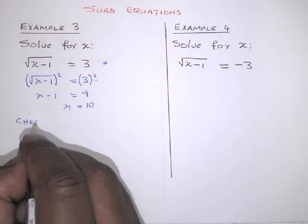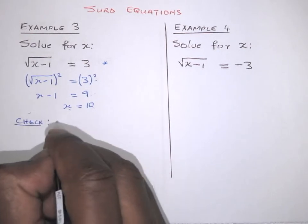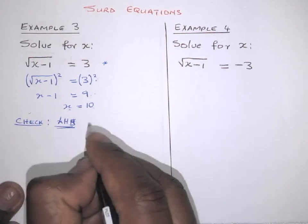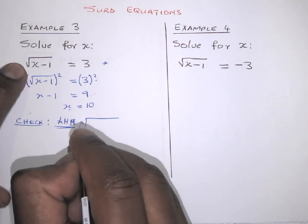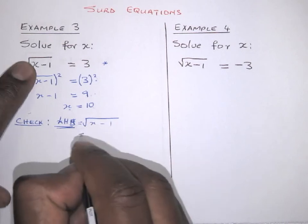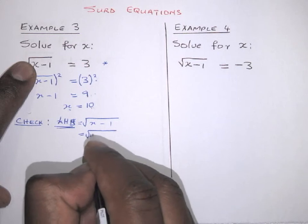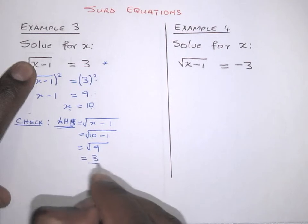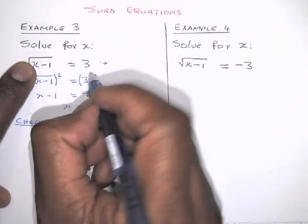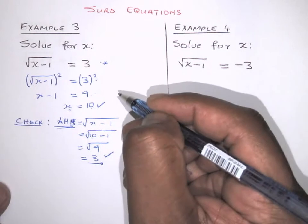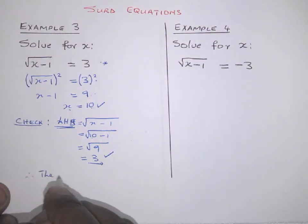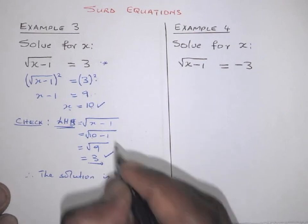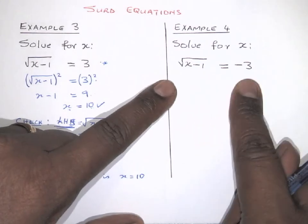Checking: left hand side with x = 10 gives √(10 − 1) = √9 = 3, which equals the right hand side of 3. So x = 10 is correct. Therefore the solution to this problem is x = 10.